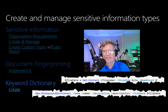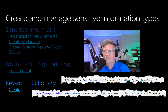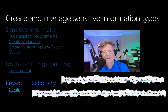Data loss prevention can identify, monitor, and protect your sensitive items. Identifying sensitive items sometimes requires looking for keywords, particularly when identifying generic content such as healthcare-related communication or inappropriate language. Although you can create keyword lists in sensitive information types, keyword lists are limited in size and require modifying XML to create or edit them.